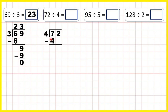Now 4 is 1 times 4, so 1 goes in our answer line. Then we subtract and bring down. So 7 minus 4 is 3, and we can bring down the 2.